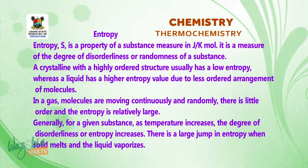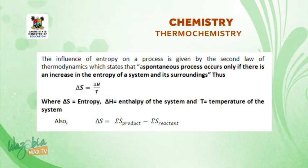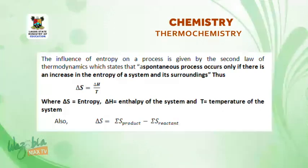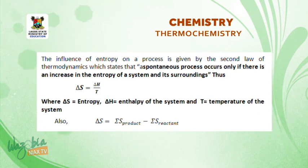There is a large jump in entropy when a solid melts and when the liquid vaporizes. The second law of thermodynamics states that a spontaneous process occurs only if there is an increase in the entropy of the system and its surroundings. Entropy change delta S is given as delta H over T, where delta H equals enthalpy change of the system and T equals temperature of the system. You can also calculate entropy change as summation of entropy of the products minus summation of entropy of the reactants.